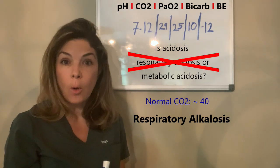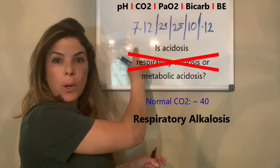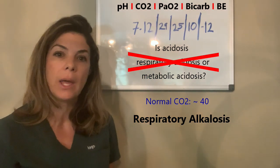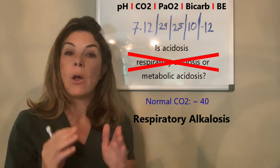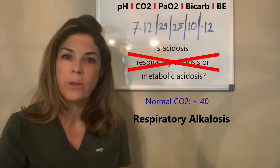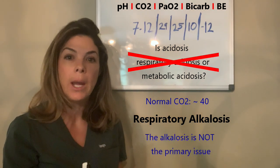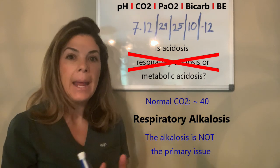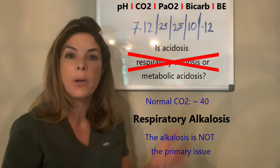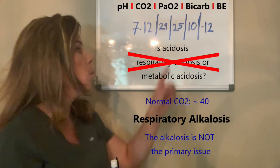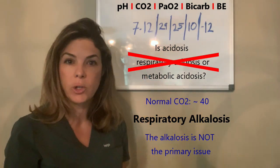So how come we have a pH of 7.12? How come we're acidotic if we have a respiratory alkalosis? Because the alkalosis is not the primary issue. Clearly this baby must have something else going on, and the body is trying to compensate by creating a respiratory alkalosis.